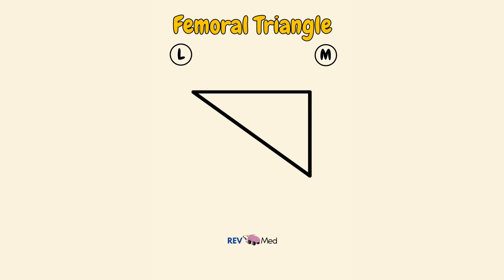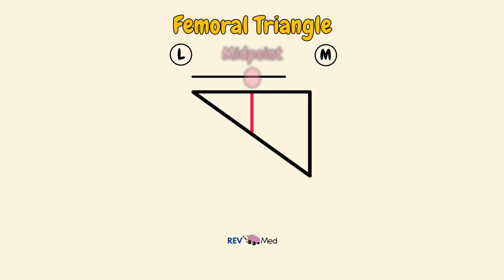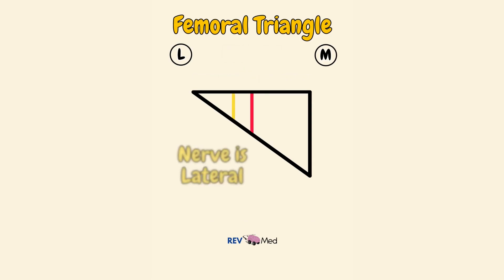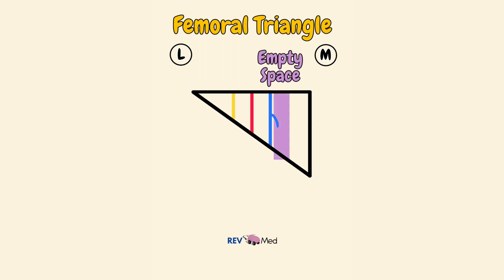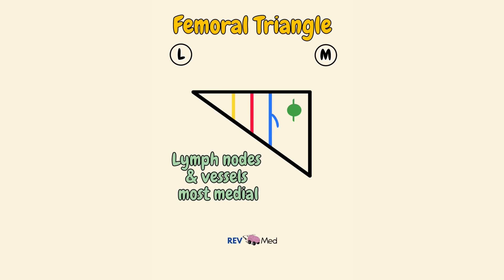Now for the contents. In the midpoint, we'll draw an artery in red. Lateral to it, we have a nerve in classic yellow. Medial to the artery, we have a vein in blue, along with its tributary. Medial to the vein, we'll have an empty space. And finally, most medial, we'll draw in our lymph nodes and vessels in green.